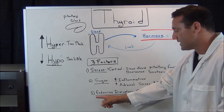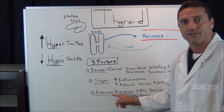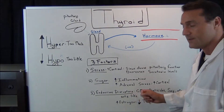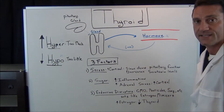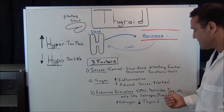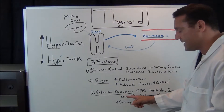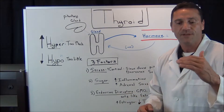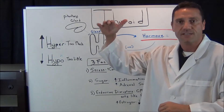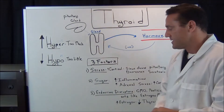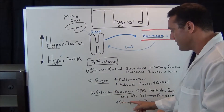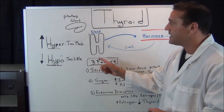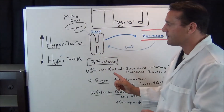The last factor is what I call endocrine disruptors. This includes GMO foods, pesticides, insecticides, and soy. Basically, they all act like estrogen mimickers. If there's too much estrogen in the body, it slows down thyroid function. So endocrine disruptors, sugar, and stress — these are three factors that will collectively slow down the thyroid.